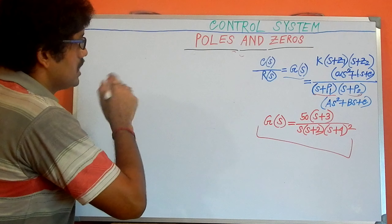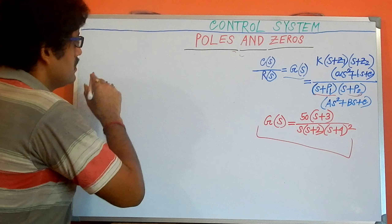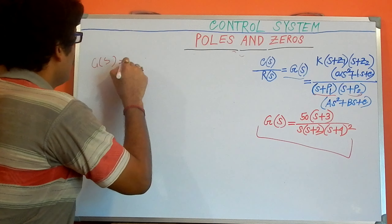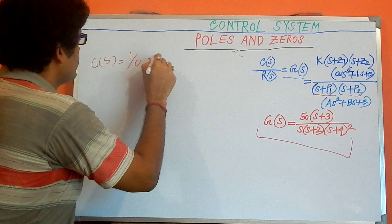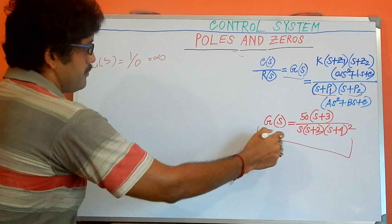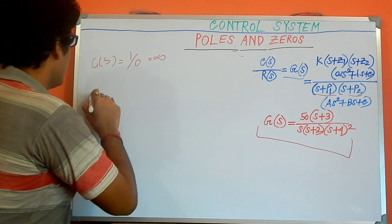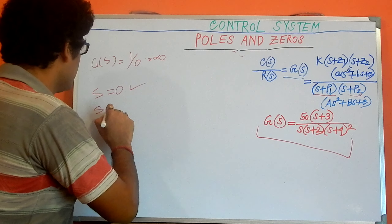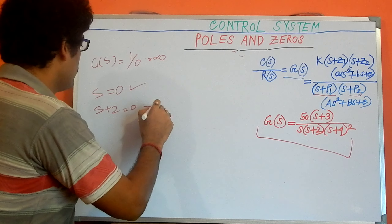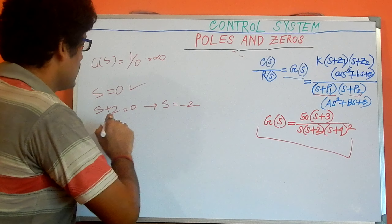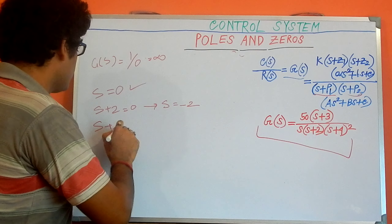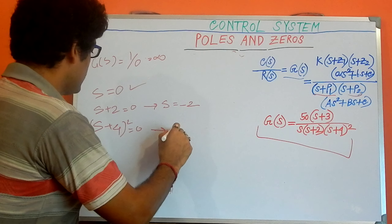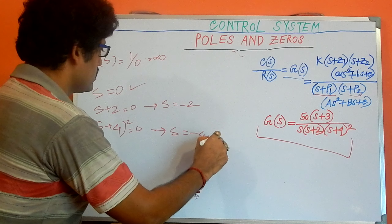So what are the poles in this example? The poles arise when G(s) = 1/0, giving infinity. So set the denominator equal to zero. The first factor gives s = 0. The next part s + 2 = 0 gives s = -2. And the last part s + 4 = 0 gives s = -4.